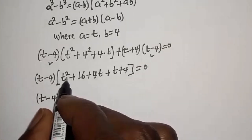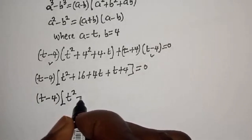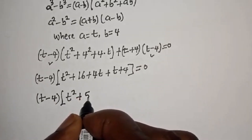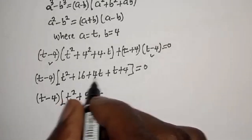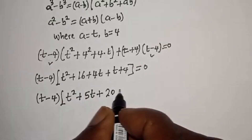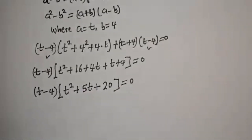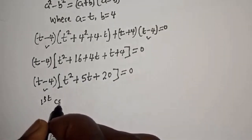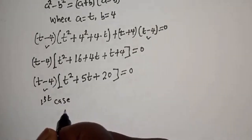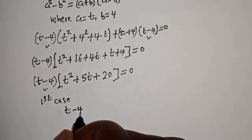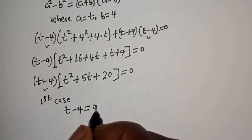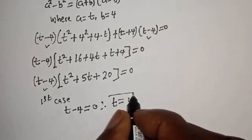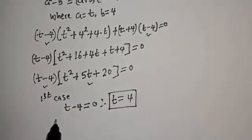This gives t minus 4, multiplied by t squared plus 5t plus 20, equals zero. There are two cases here. The first case: t minus 4 is equal to zero, therefore t is equal to 4. And we have a second case.